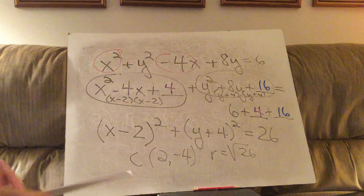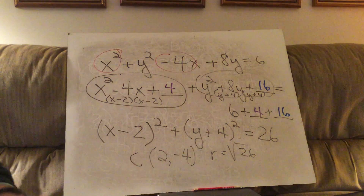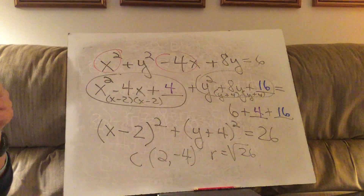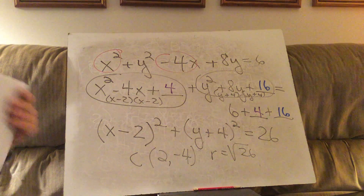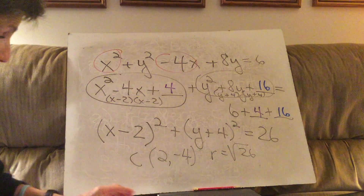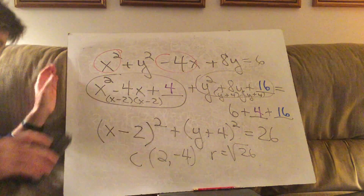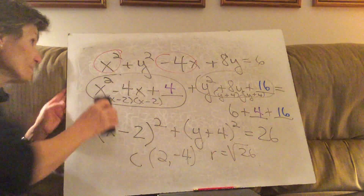Now you can tell that the center of the circle is at (2, -4) and the radius is the square root of 26. That's a lot of steps, but that's what you have to do to get your equation into standard form. Let's try another one — problem d.